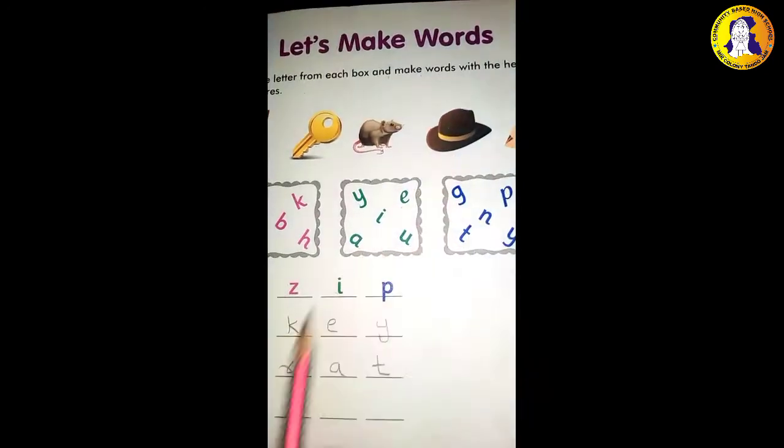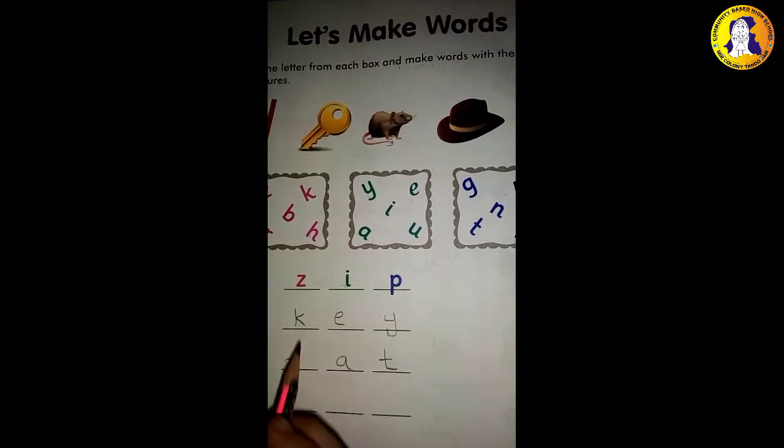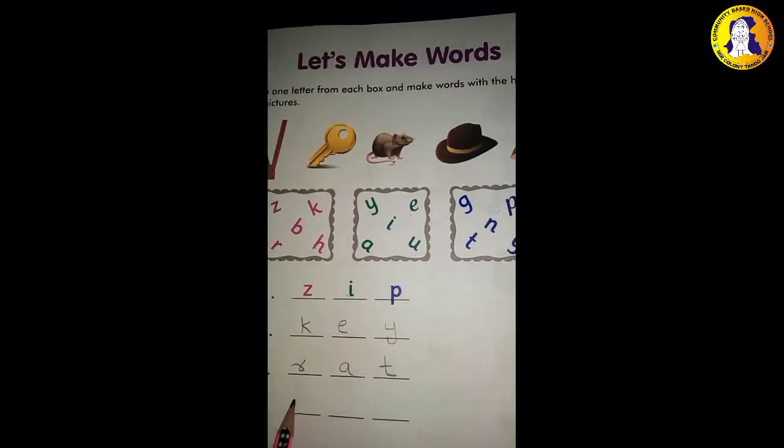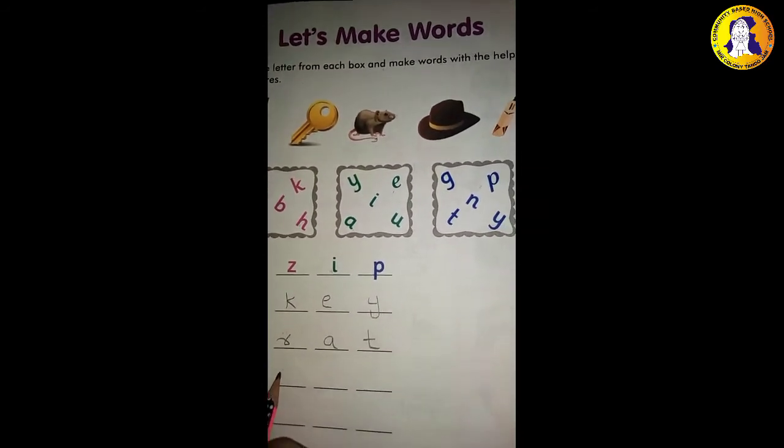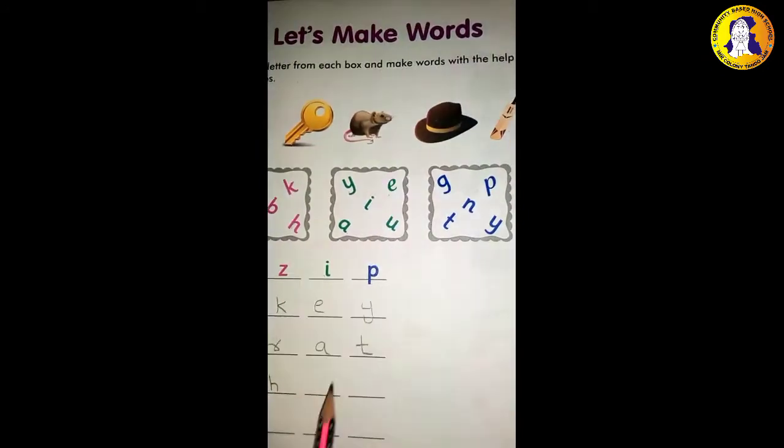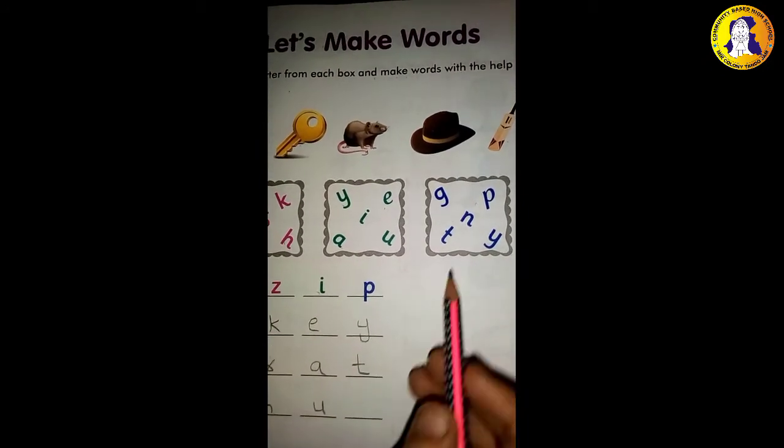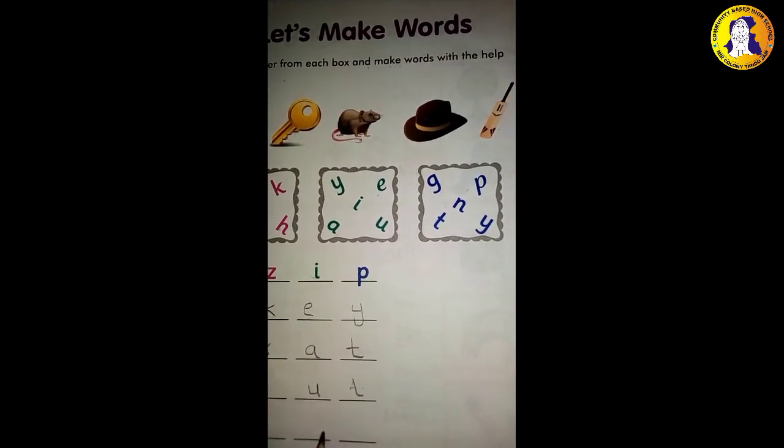Four. What is it? Hut. H, then U, then T. Hut, H-U-T.